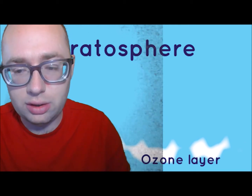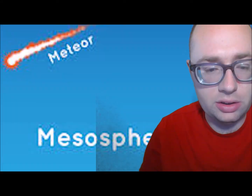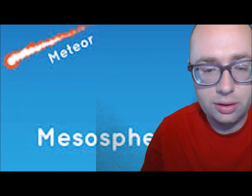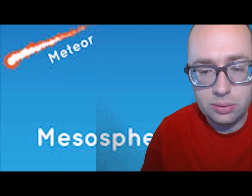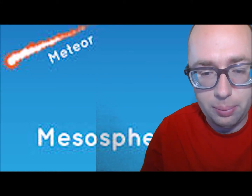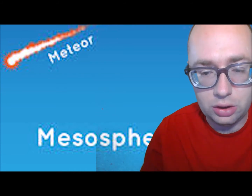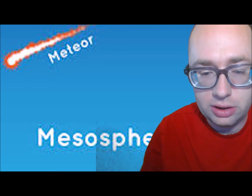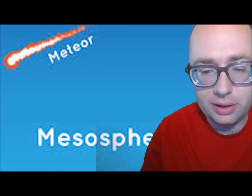Weather balloons go as high as the stratosphere. The mesosphere covers the next 50 miles beyond the stratosphere. This is where most meteors burn up upon entry. Winds in this layer are strong, so the temperature is not stable. This layer of the atmosphere is very cold, about negative 180 degrees Fahrenheit. The coldest place on Earth is on top of the mesosphere.